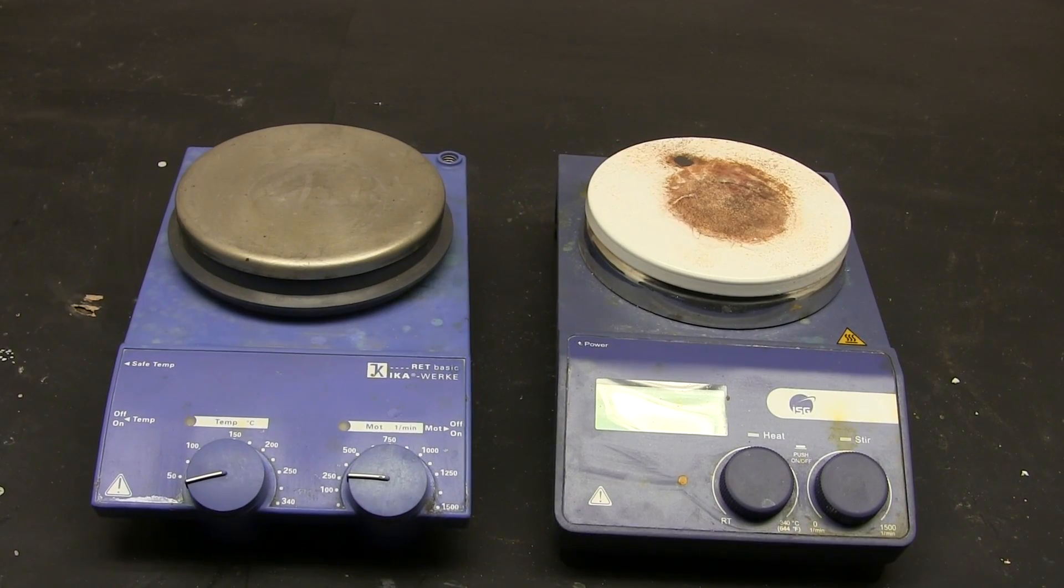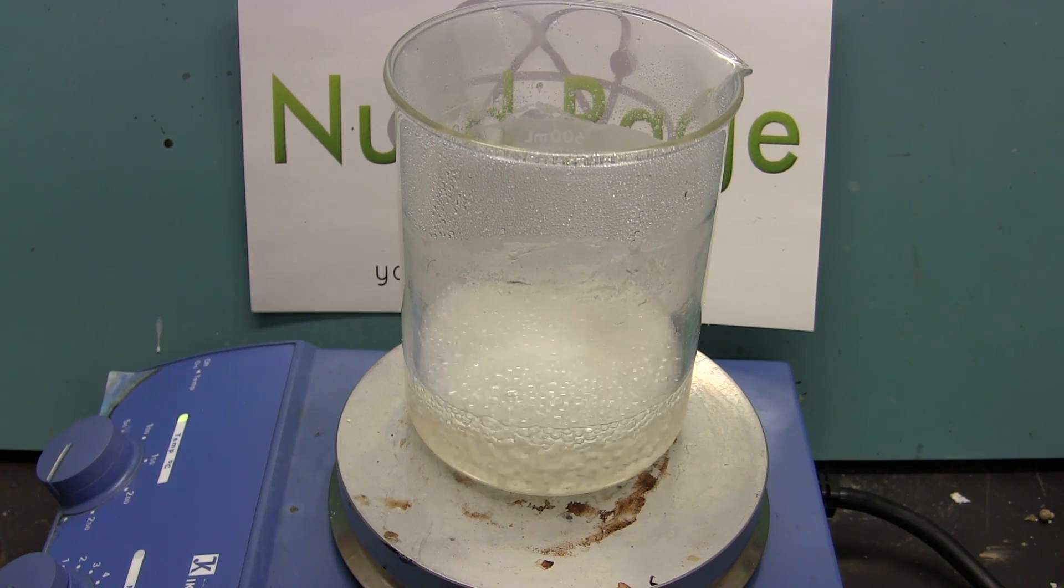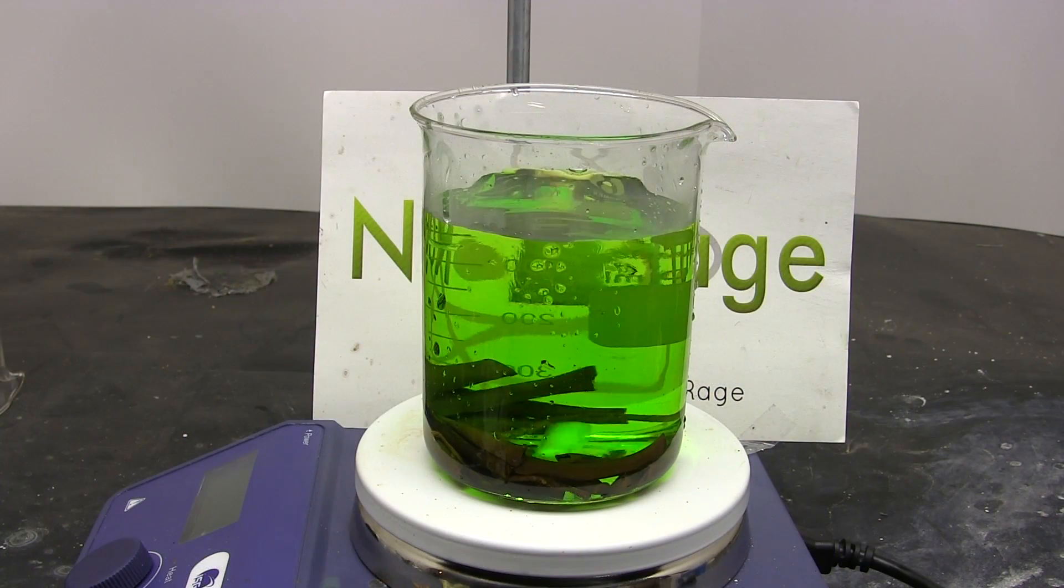Almost every serious chemistry lab has a hotplate stirrer. It's probably the number one piece of equipment you've seen me use in most of my videos. As the name suggests it behaves as a hotplate and allows you to heat up liquids, but it also has a magnetic stirring function.